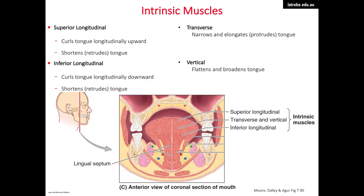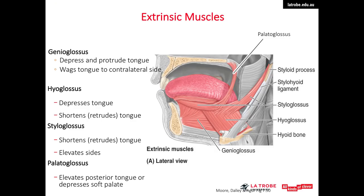The intrinsic muscles change the shape of the tongue, with both origin and insertion within the tongue itself. They are the superior and inferior longitudinal, and the transverse and vertical muscles. The superior and inferior longitudinal muscles work together to make the tongue short, thick, and retracted. The transverse and vertical muscles do the opposite: the transverse narrows and elongates the tongue, while the vertical flattens and broadens it. All intrinsic muscles are supplied by the hypoglossal nerve.